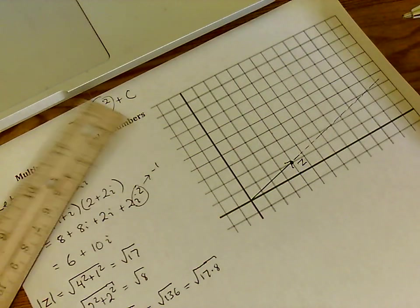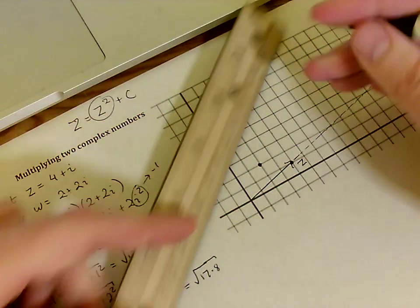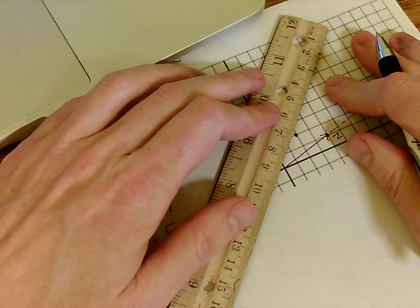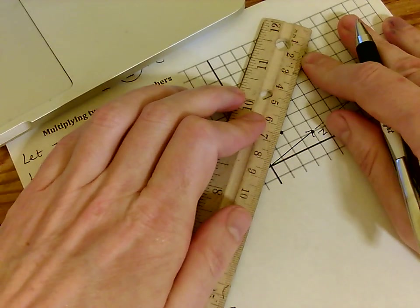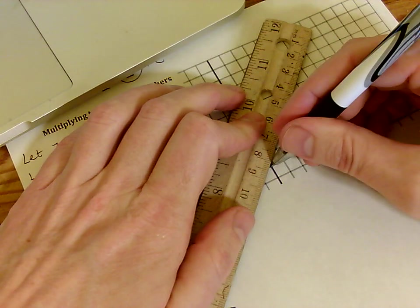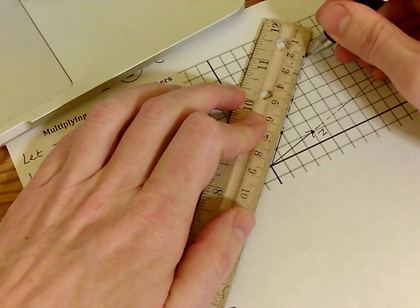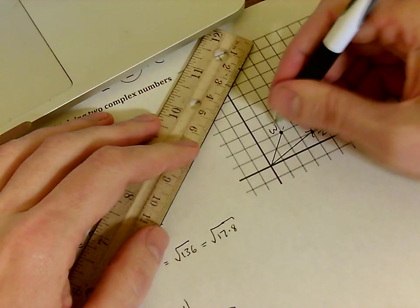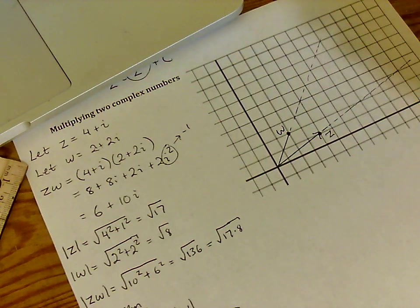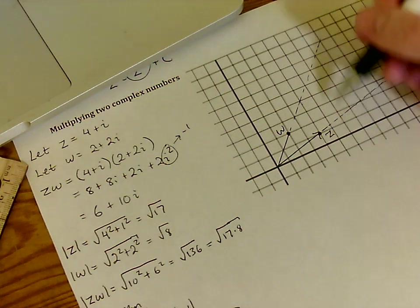And now w is 2 plus 2i. And z times w was 6 plus 10i, which is here.